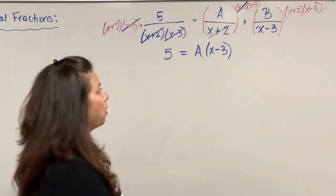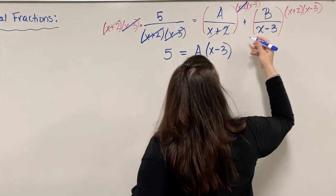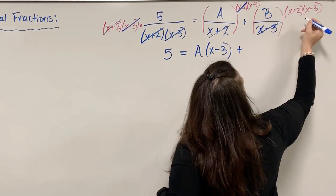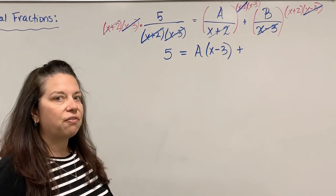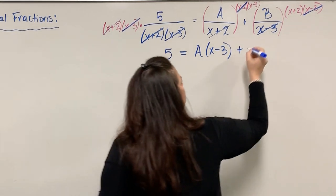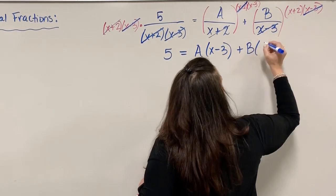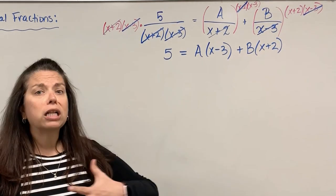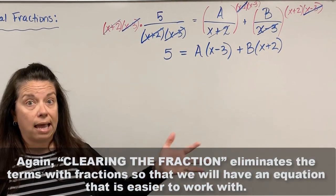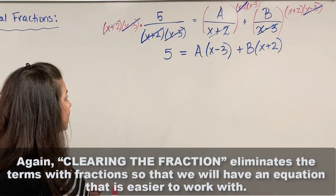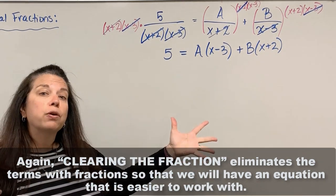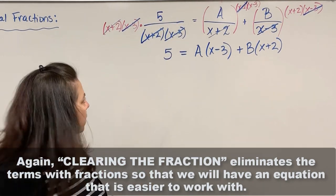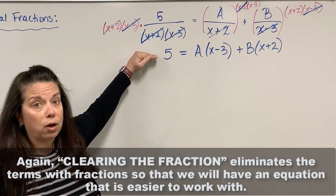What I have left over is now 5 equals on the right hand side, going fraction by fraction. The denominator x+2 divides out leaving me with A times (x-3), and x-3 divides out leaving B times (x+2). That whole process is called clearing the fraction.